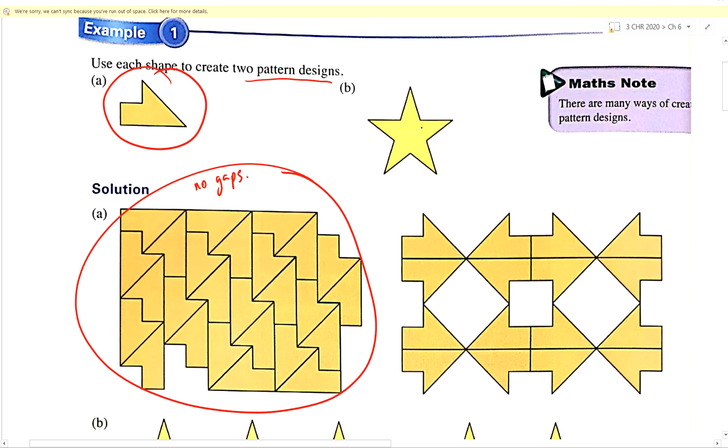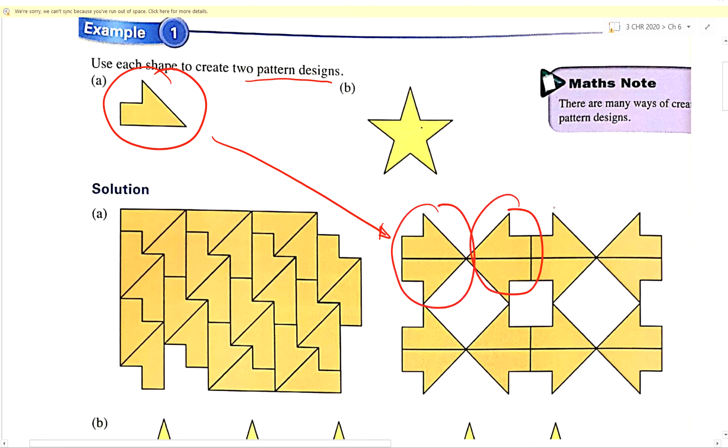Now using the same shape over here, you can actually create big arrows like this. You can flip them around - just as long as they repeat themselves, it is also considered a pattern.